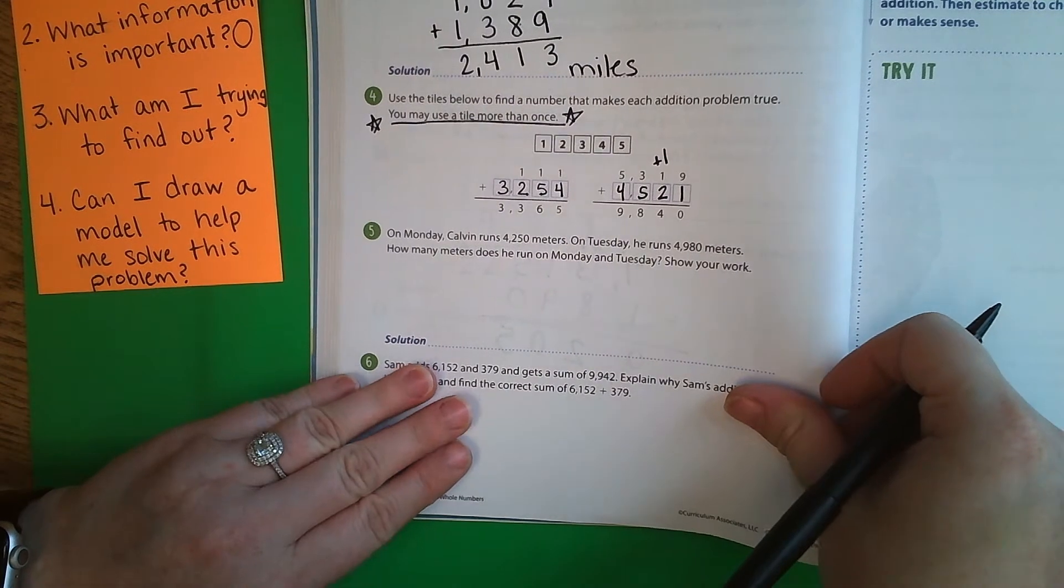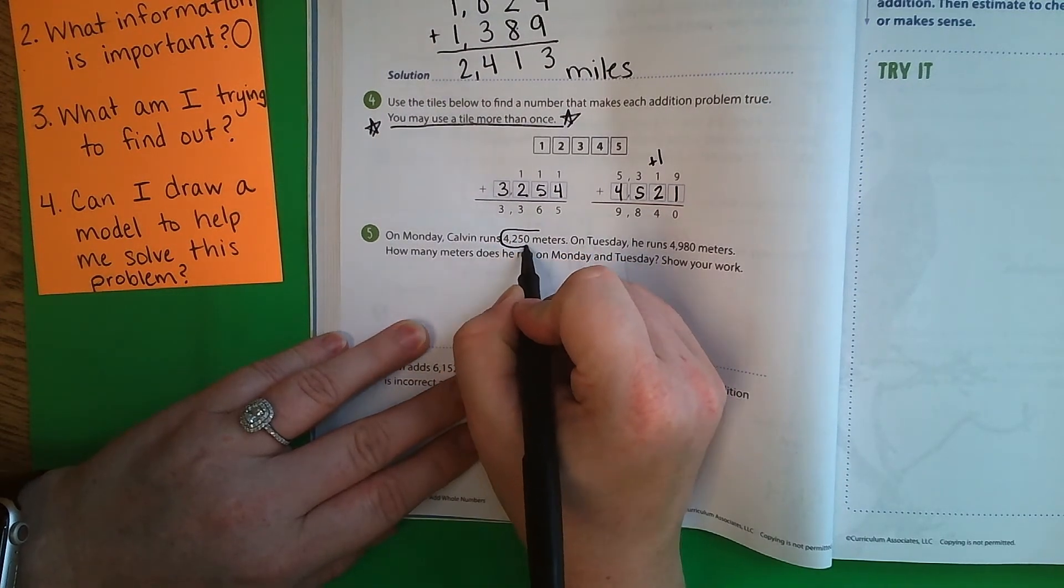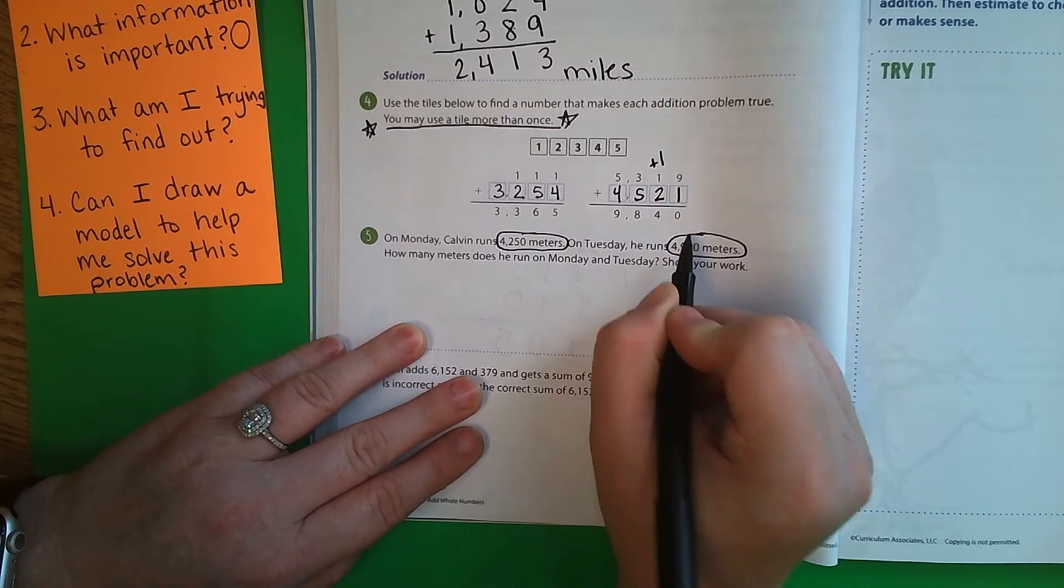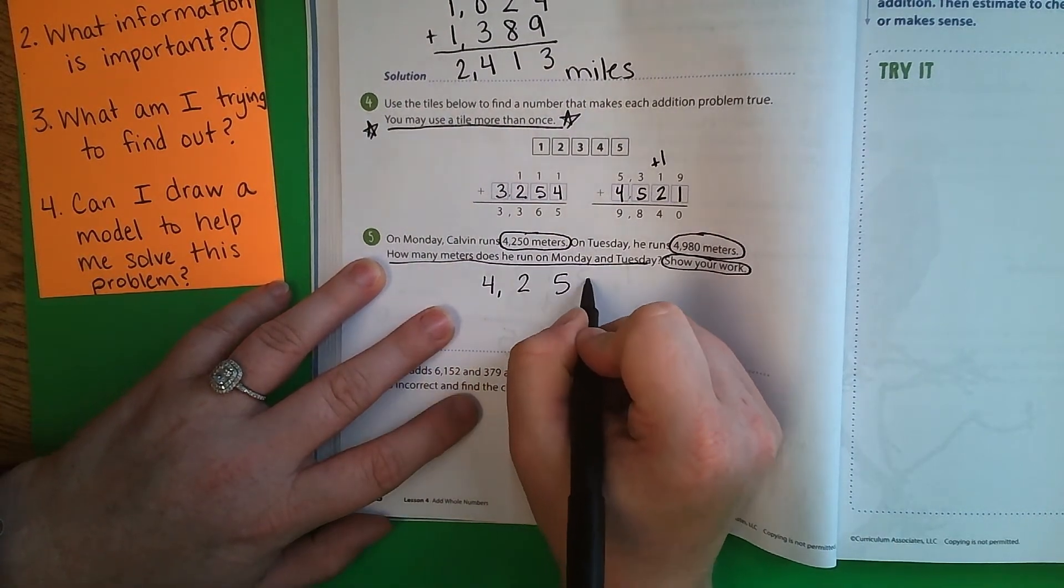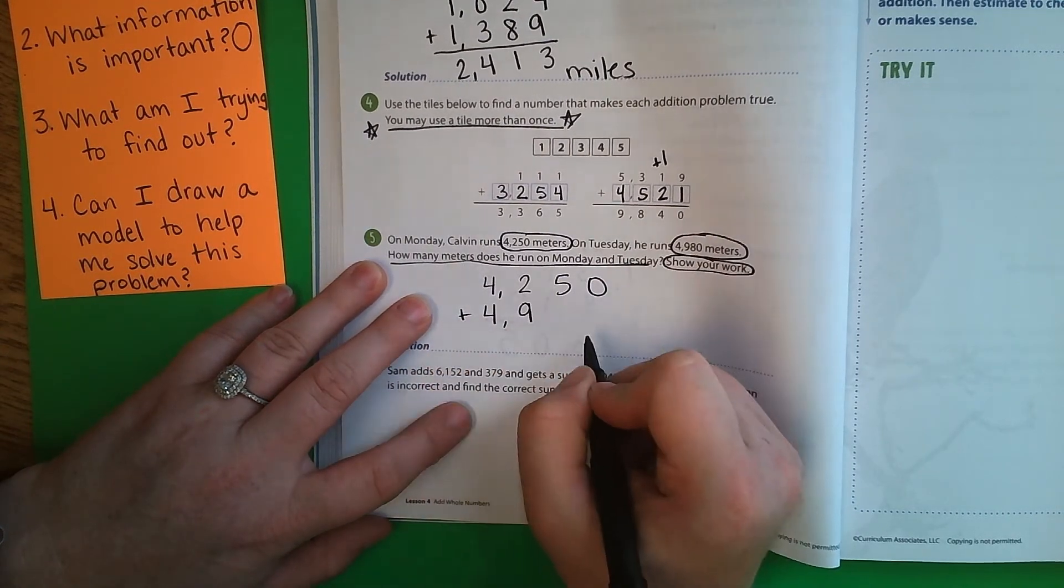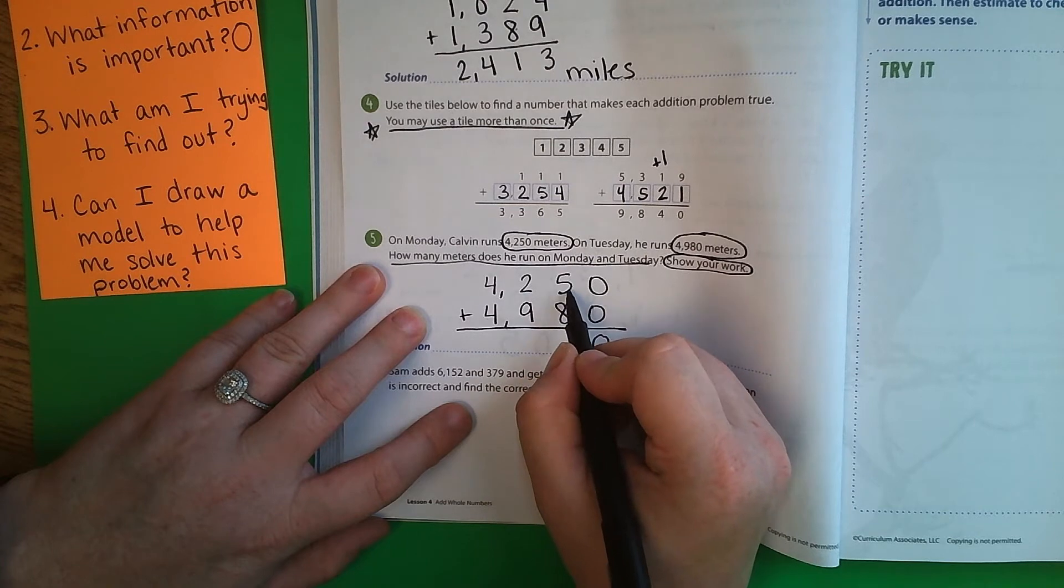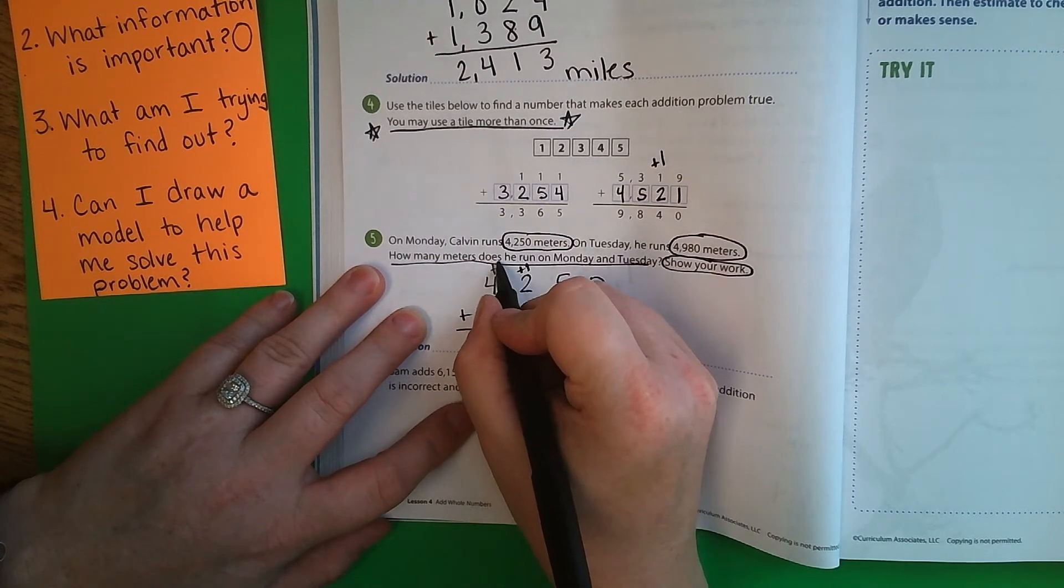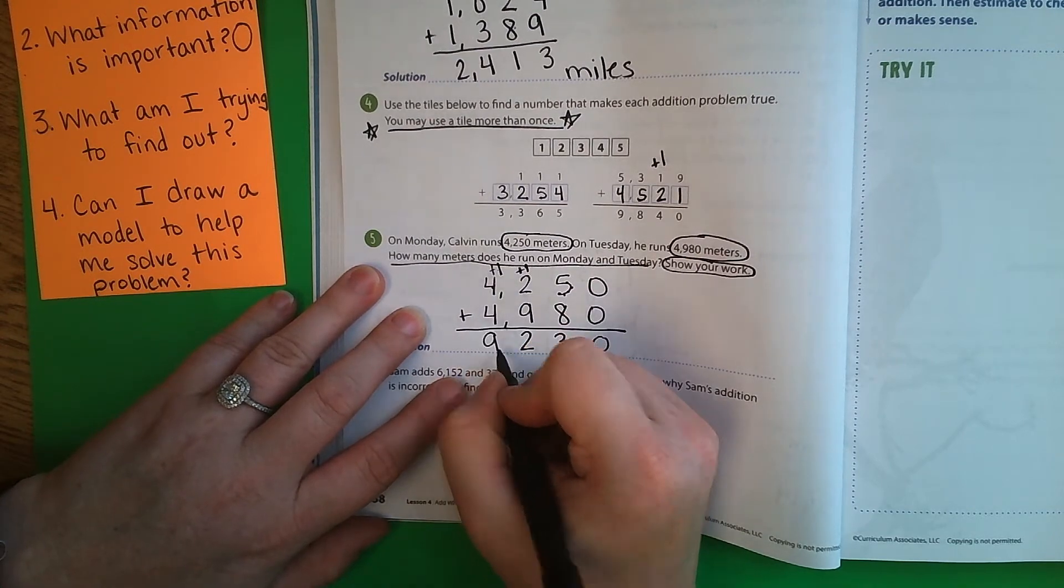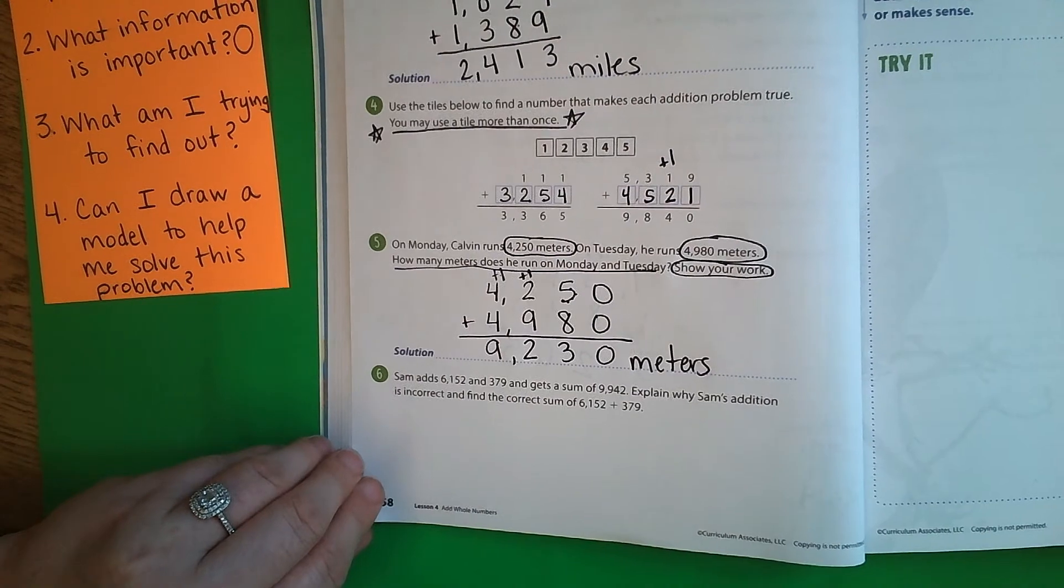On Monday, Calvin runs 4,250 meters. On Tuesday, he runs 4,980 meters. How many meters does he run on Monday and Tuesday? Okay, we're talking about how many miles Calvin runs. So those are the two important numbers. How many meters does he run on Monday and Tuesday? Show your work. So we've got 4,250 plus 4,980. Let's add those together. 0 plus 0 is 0, 8, 9, 10, 11, 12, 13. Carry my 1. 9, 10, 11, 12. Carry my other 1. 4 plus 4 is 8, plus 1 more is 9. So your answer should be 9,230 meters, because you don't want to forget to label it. And our last one on this page...